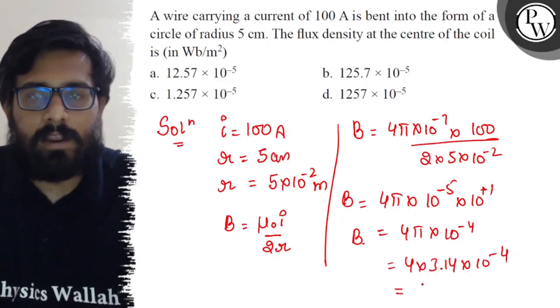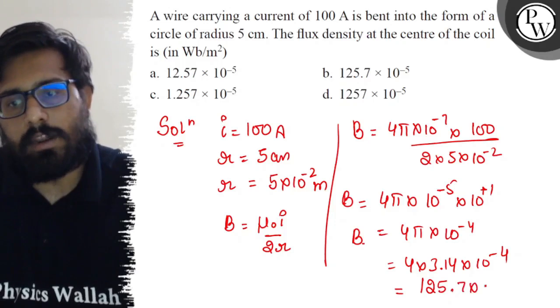So the value of B comes out to be 125.7 × 10⁻⁵ Wb/m².